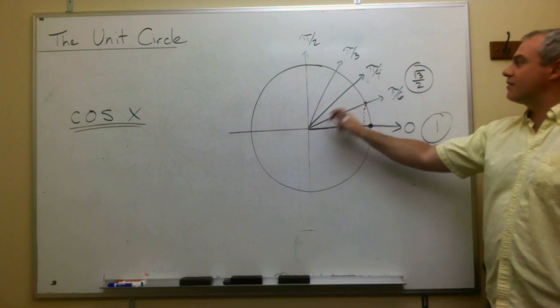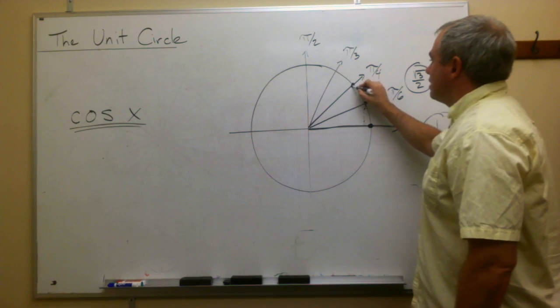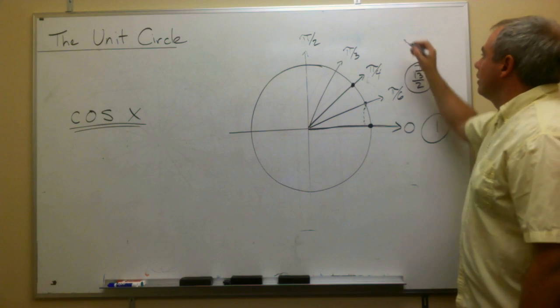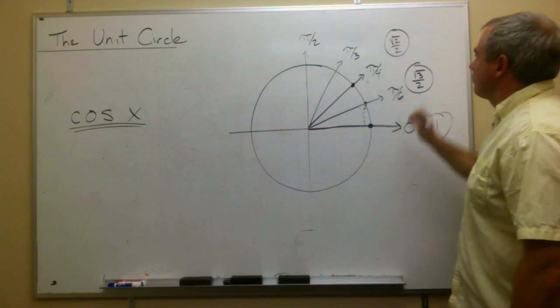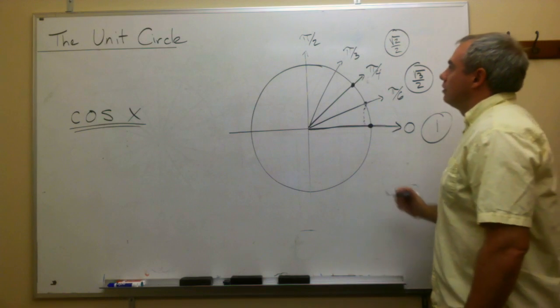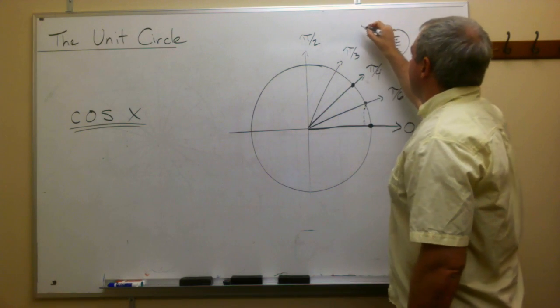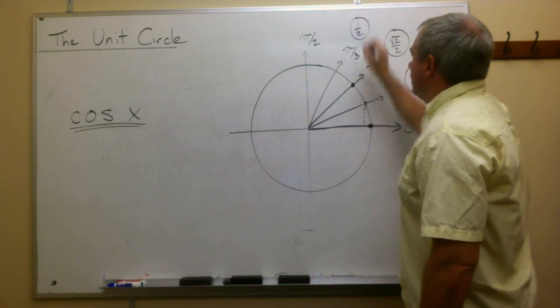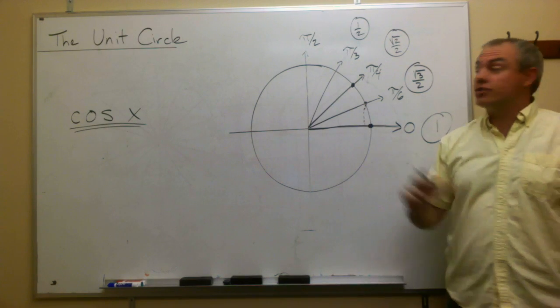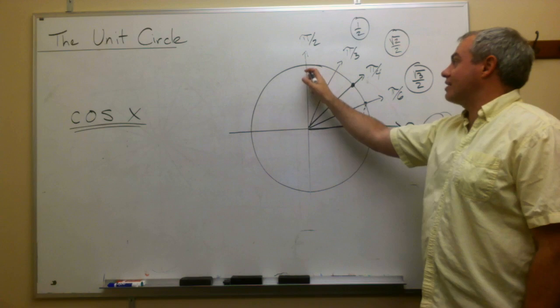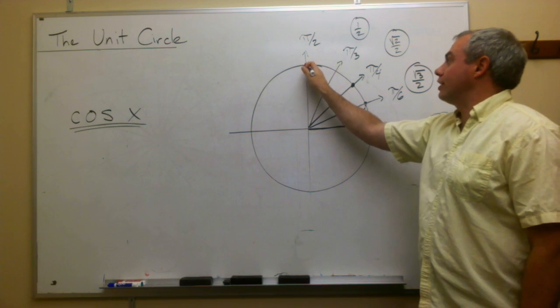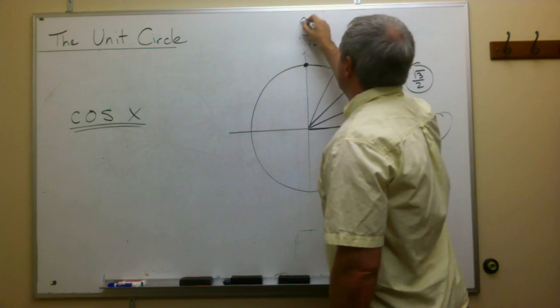The x value at this angle, pi over four, is the square root of two over two. The x value of pi over three is one over two. And then finally, if we look straight up the positive y-axis, we can see that the x value of this point would be zero.